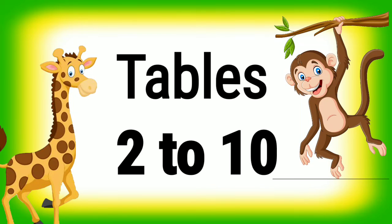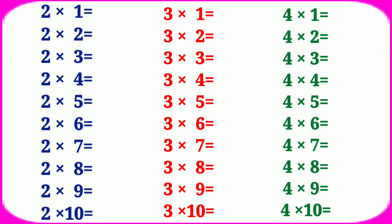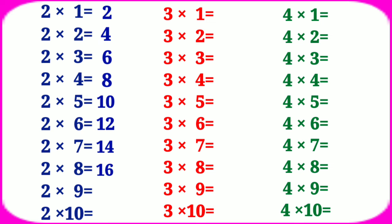Tables from 2 to 10. Table of 2: 2 ones are 2, 2 twos are 4, 2 threes are 6, 2 fours are 8, 2 fives are 10, 2 sixes are 12, 2 sevens are 14, 2 eights are 16.